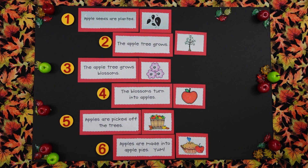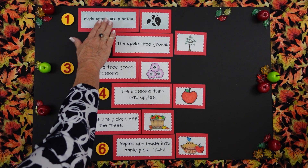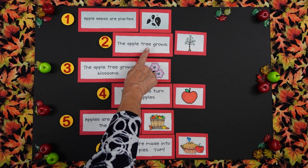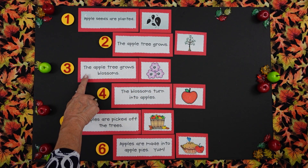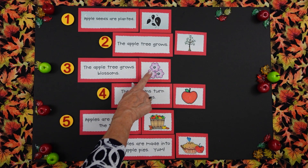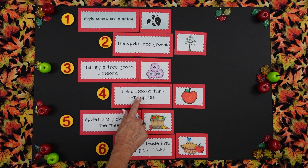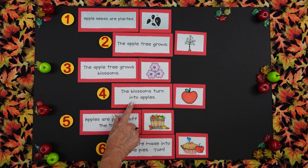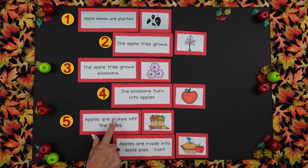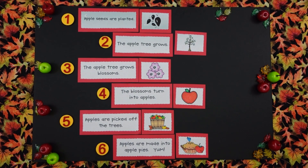Now can we read all these together? Apple seeds are planted. Number two, the apple tree grows. Number three, the apple tree grows blossoms. Number four, the blossoms turn into apples. Number five, apples are picked off the trees. And number six, apples are made into apple pies.